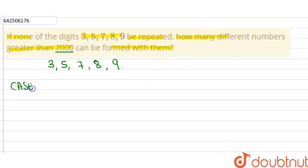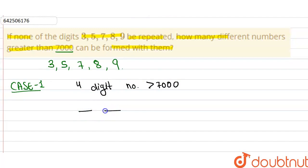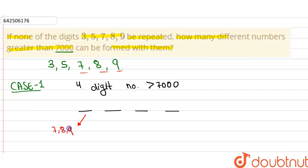In Case 1, we form a 4-digit number that is greater than 7000. We have 4 places for the 4-digit number. At the first place, we can use only 7, 8 and 9, because if we use 3 and 5, then the number formed is less than 7000. So at the first position, we can use only 3 numbers.